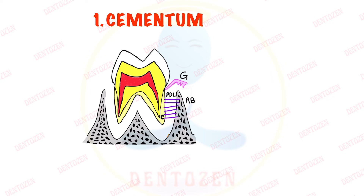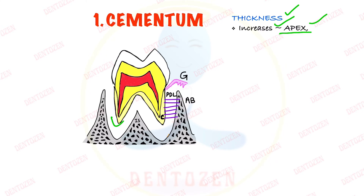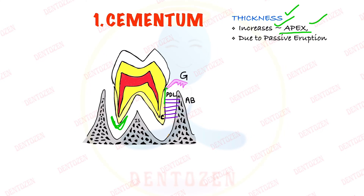In cementum, the first important change is that its thickness increases with age, especially at the apex of the roots of the teeth. This happens because of the passive eruption of the teeth — the gingival attachment moves and the thickness of cementum increases at the apex.